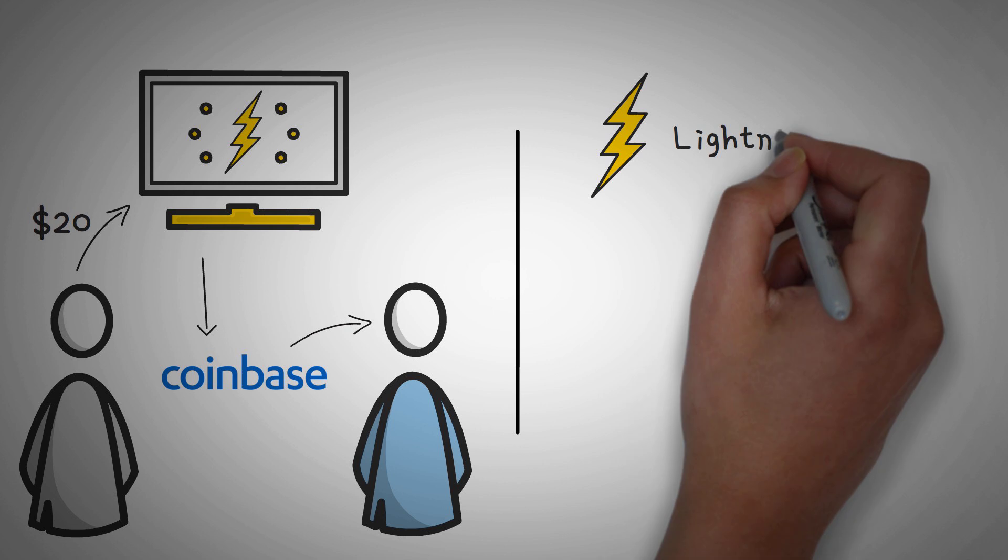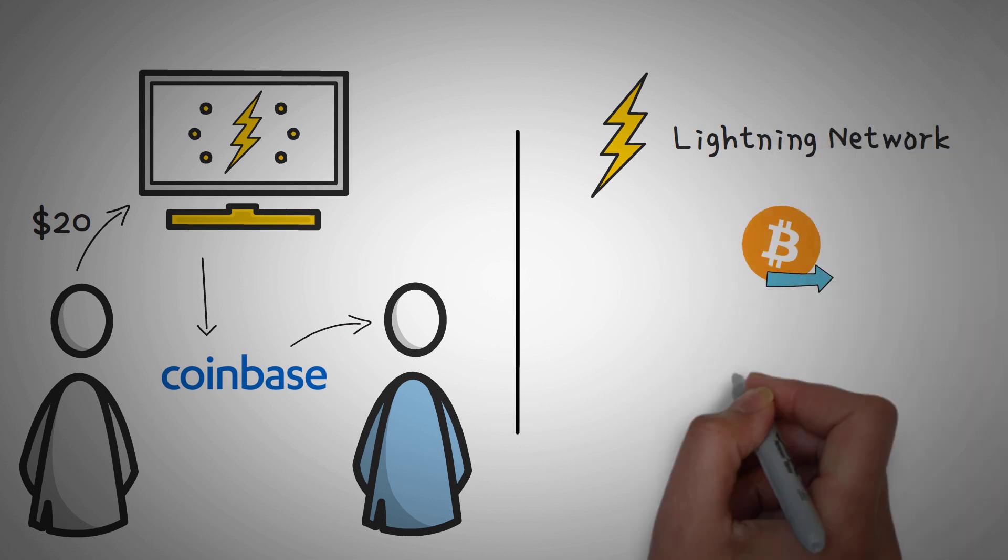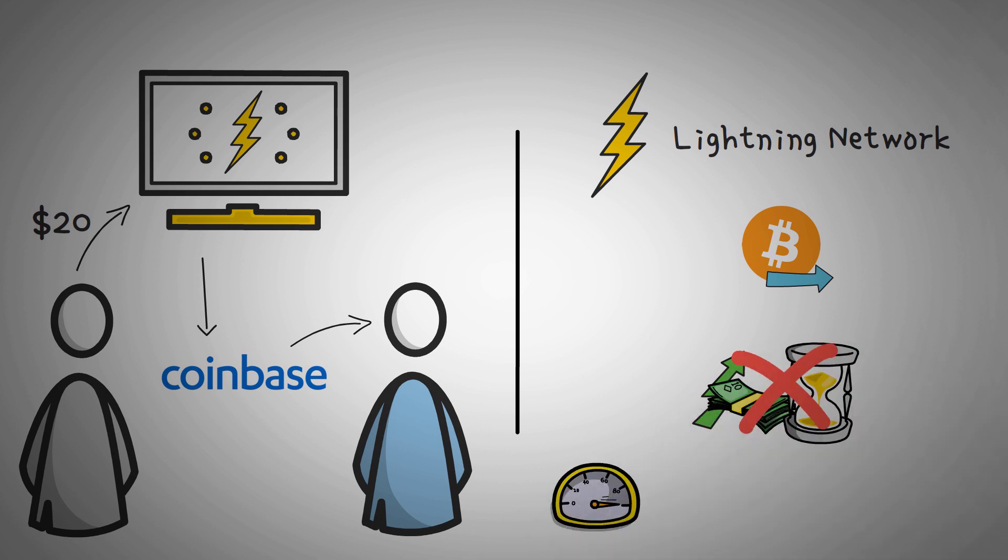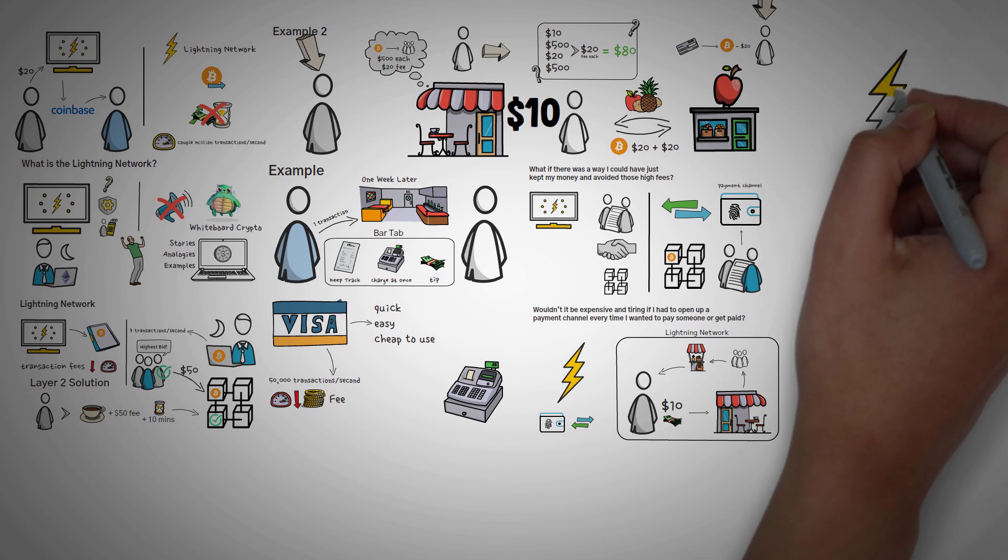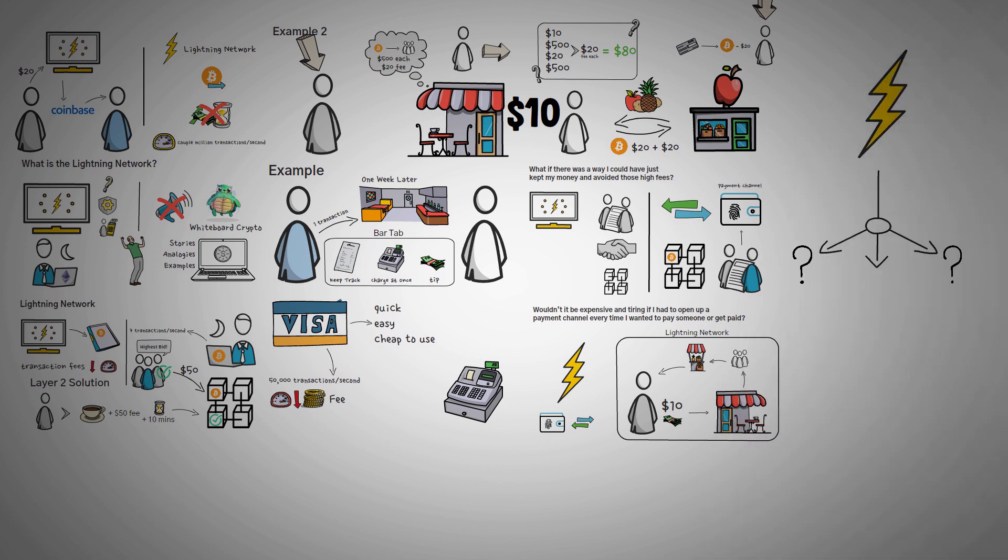So to conclude, the Lightning Network is a system set up to send Bitcoin payments without the high fees and without waiting on the 10 minute block time. Theoretically, the Lightning Network could scale up to a couple million transactions per second. Some people think this will be the next cryptocurrency version of Visa. As we're ending this video, we don't really want to go into the specifics of the Lightning Network because that's for another video. This was just an overview.